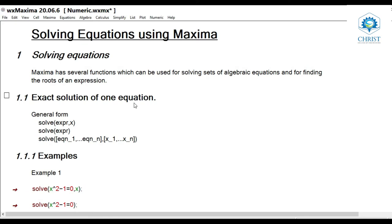First: exact solution of one equation — one equation in one unknown variable. The general form is: solve(expression, x), or solve(expression) without specifying the unknown variable. This solves the algebraic expression for the variable x and returns a list of solutions in x. If the given expression is not an equation, Maxima itself assumes it equals zero. The expression may be a rational one and may contain trigonometric functions.